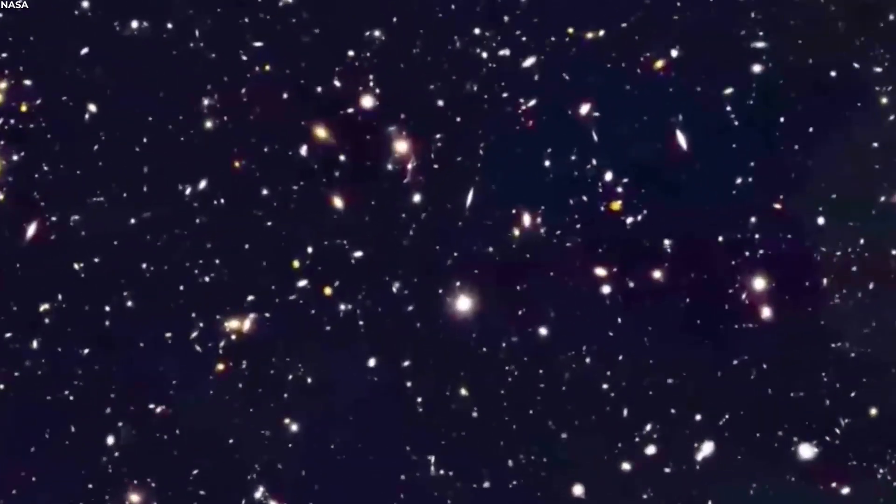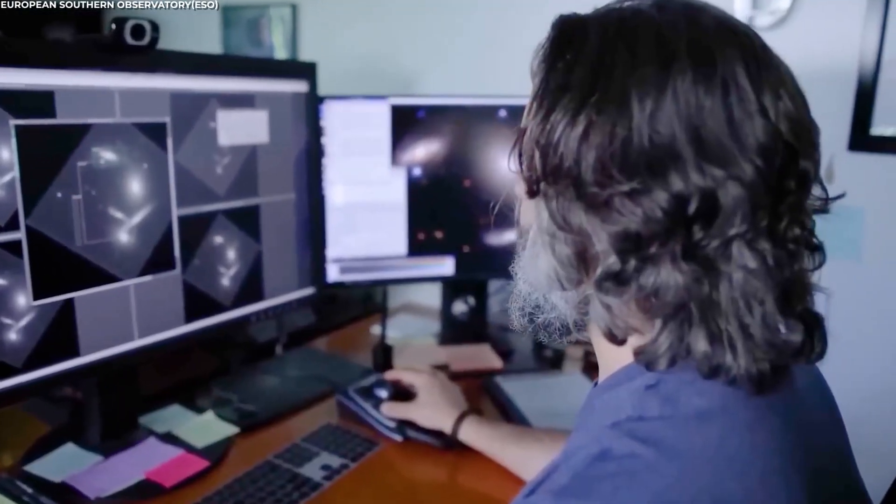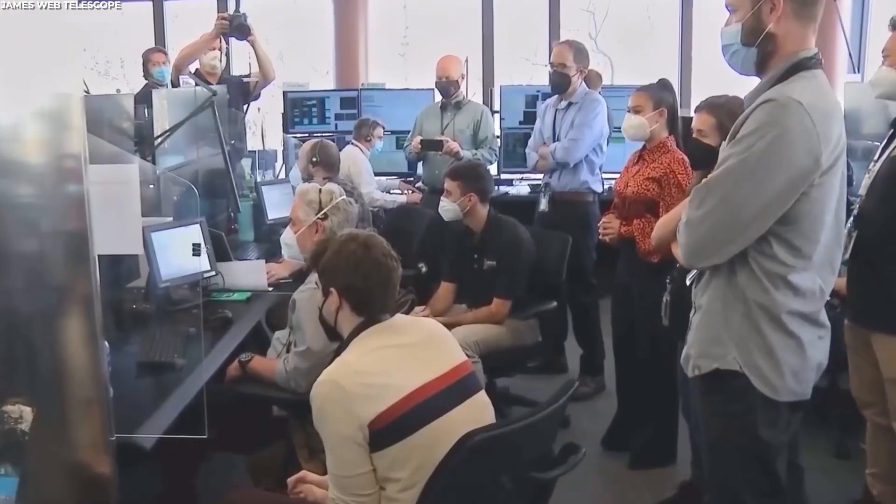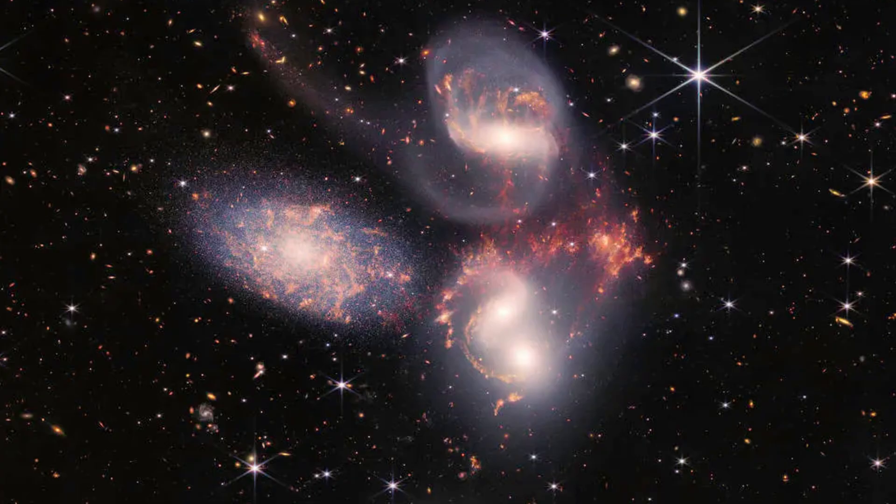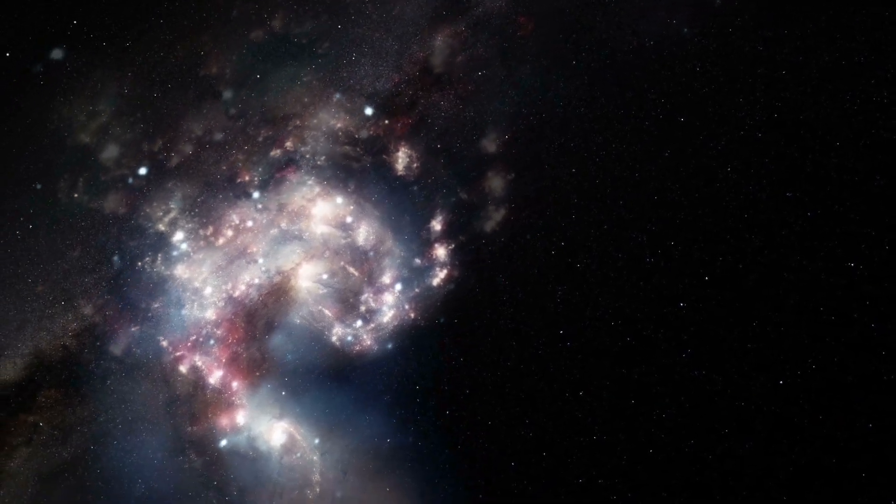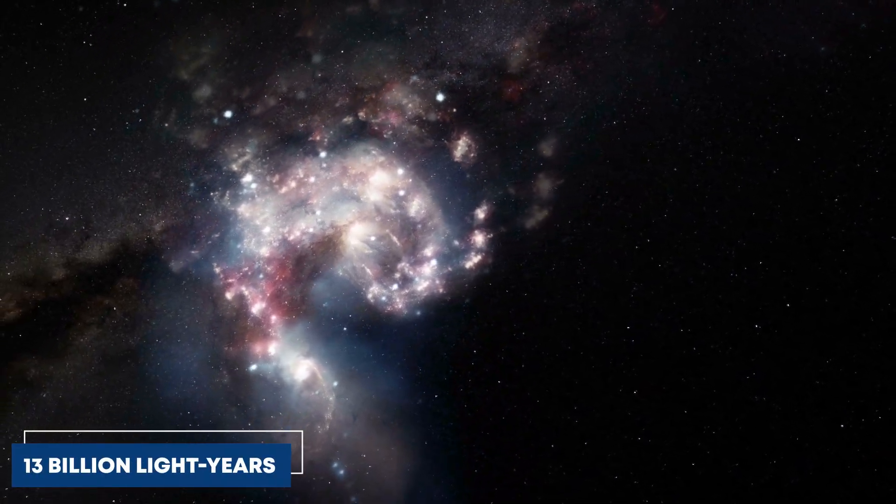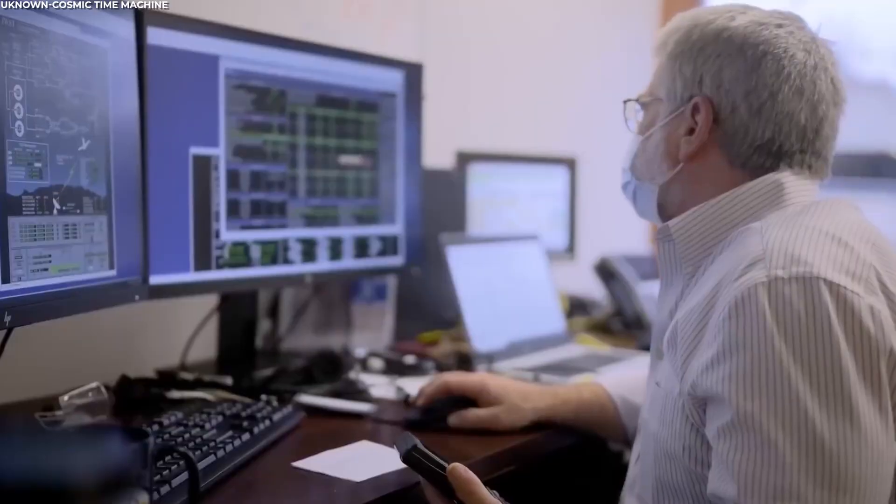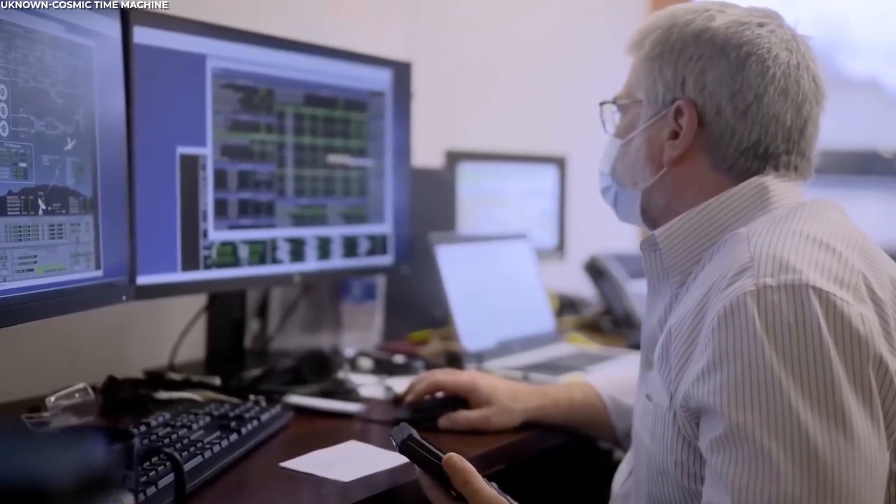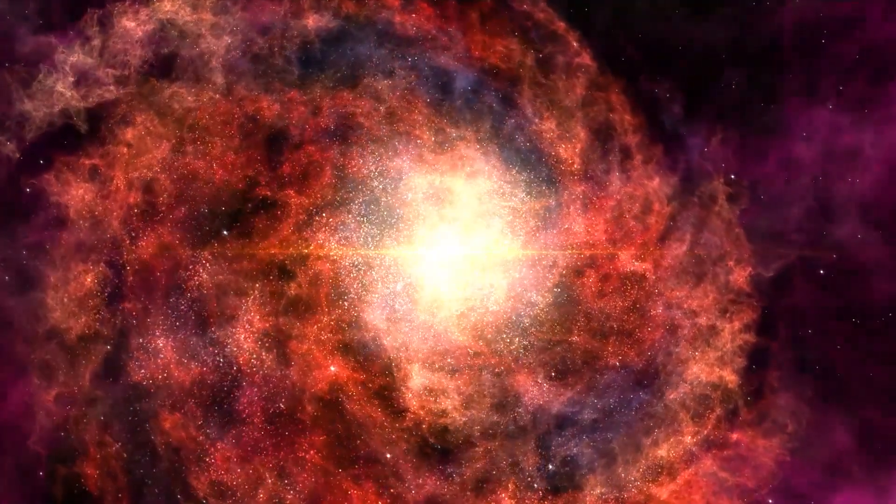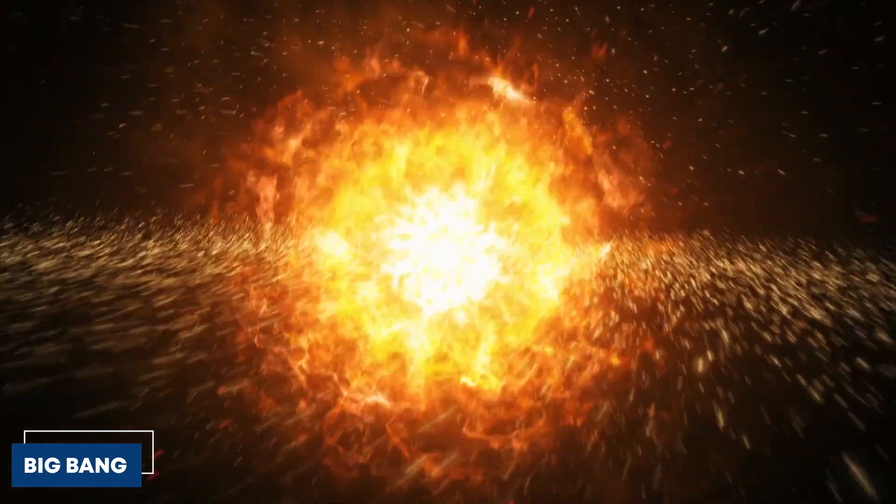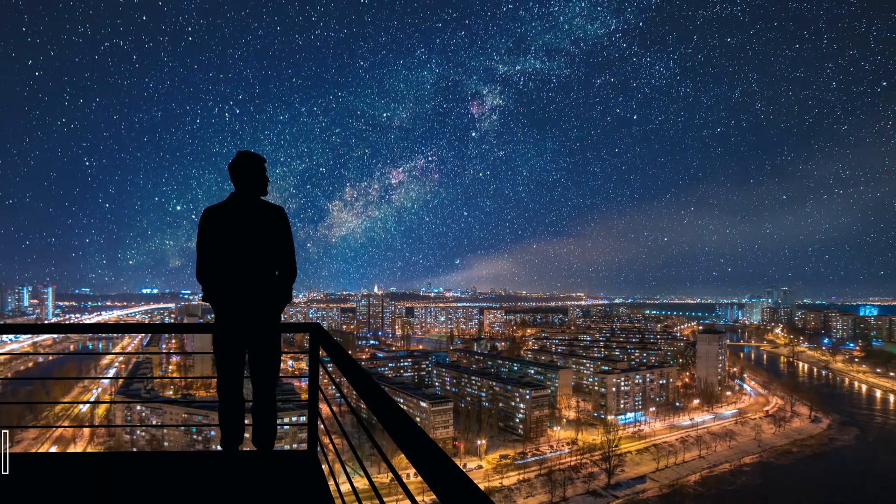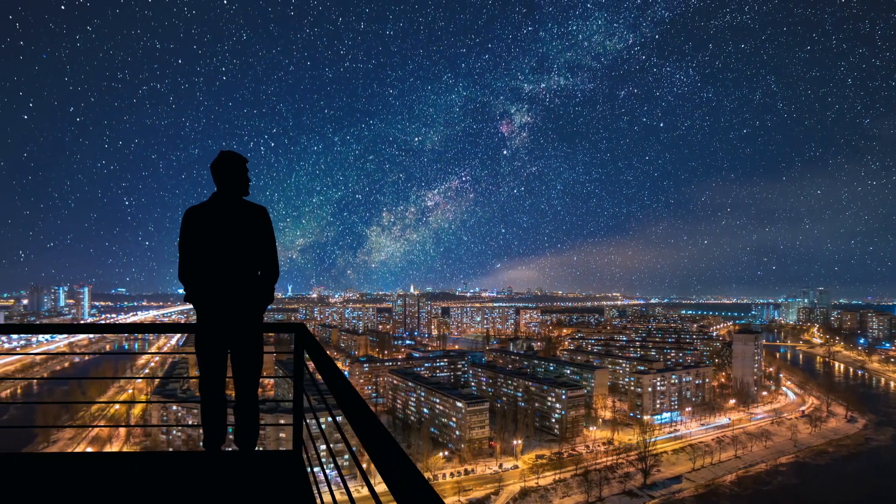These galaxies are a bit rebellious, not quite fitting into the theoretical models scientists typically use to understand the universe. Astronomers have started studying these five galaxies, situated an incredible 13 billion light-years away from our home. These are not just a glance into the past, but a deeper look at what galaxies resembled only 300 to 500 million years after the Big Bang. Almost 14 billion years have passed since then.